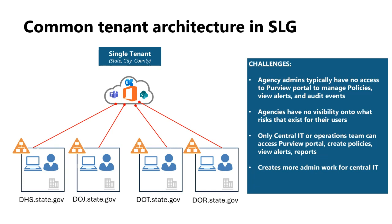This is the typical scenario we're seeing with government customers. They're in a single shared tenant managed by a state, city, or county. Central IT is managing the tenant with multiple agencies — like Department of Human Services and Department of Justice. This architecture comes with challenges: agency admins typically have no access to the tenant to create or manage policies, can't see alerts or audit events, have no visibility on their risks. Only central IT can access the Purview portal, create policies, view alerts, and view audit events. This creates a lot of work for central IT.